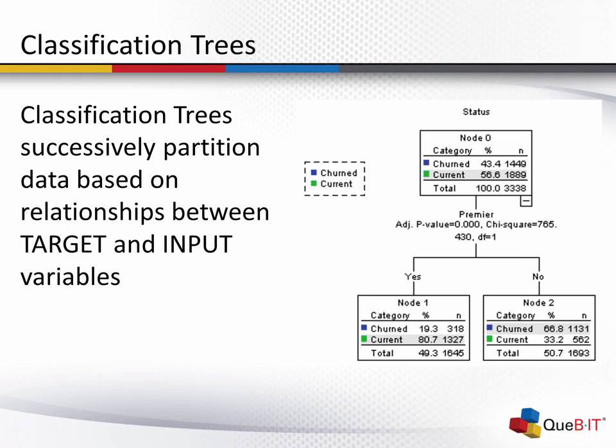Now, classification trees happen to have some really nice and attractive features. First of all, they end up creating segments that are mutually exclusive and exhaustive so that they allow you to identify homogeneous groups. They also make it very easy to construct rules for making predictions about individual cases. They also allow you to handle large numbers of predictors so it's a key driver analysis so that you can understand which predictors are the most important. They also allow you to handle interactions, can handle non-linear relationships pretty easily, and they also happen to have very few assumptions.